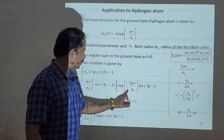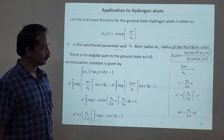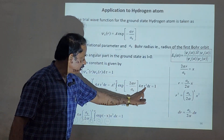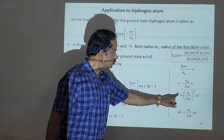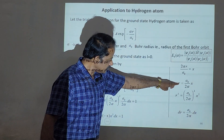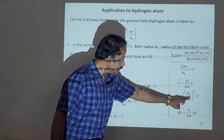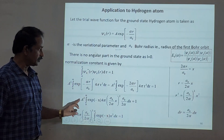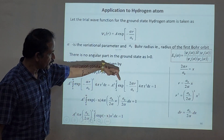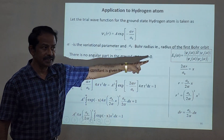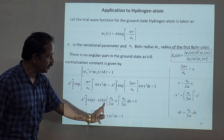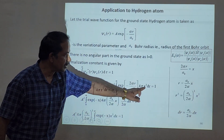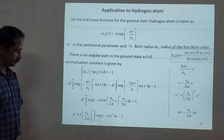We substitute x = 2αr/a₀, so r = a₀x/(2α) and r² = (a₀/(2α))² x². Differentiating gives dr = (a₀/2α)dx. Substituting all the required terms, we get a² times 4π, with e^(-x), r² replaced by (a₀/2α)²x², and dr = (a₀/2α)dx.